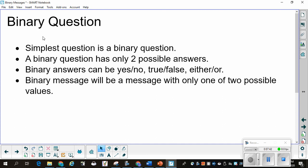Binary question. This is the simplest type of question you can ask. A binary question has only two possible answers. Yes, no, true, false, either, or. You can think blue-green, up-down, left-right. A binary message will be a message with only one of two possible values.